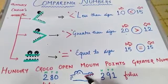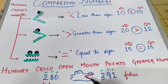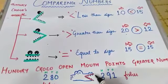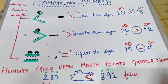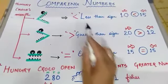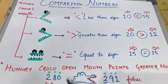Remember this point: hungry croco open mouth points greater number. So here we have hungry croco mouth open. This is mouth open. Open is mouth. So it will be greater number. We will put the sign according to that.